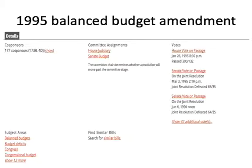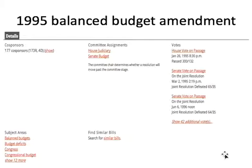For the 1995 balanced budget amendment, they needed two-thirds — 66 senators — to pass it. The House passed it with no problem. But in the Senate on March 2nd, 1995, 65 said yes and 35 said no — we were one senator away from passing a balanced budget amendment. They tried again on June 6th, 1996, and it was 64 to 35, meaning someone didn't show up or chose not to vote. Efforts have been made and it's been very close, but there haven't been recent talks about an amendment.